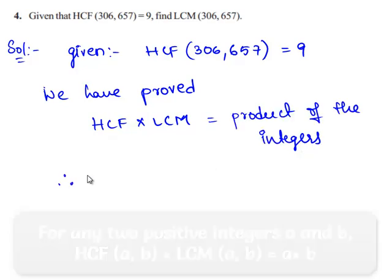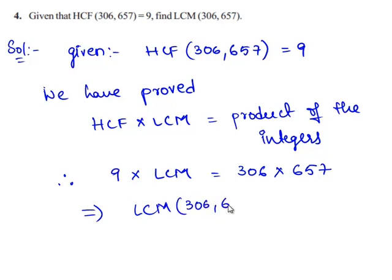Therefore, in the given problem, HCF of 306 and 657 is 9 times LCM of the given two numbers is equal to the product of the integers, that is 306 times 657, which implies LCM of 306, 657 is given by 306 times 657 divided by 9.